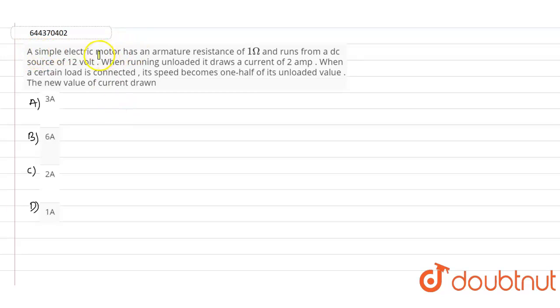So here in this question, it is given that a simple electric motor has an armature resistance of 1 ohm and runs from a DC source of voltage 12 volts. When running unloaded, it draws a current of 2 amps. When a certain load is connected, its speed becomes one half of its unloaded value.